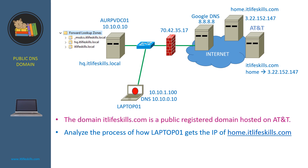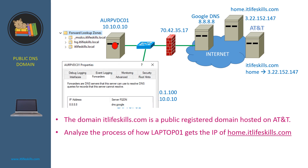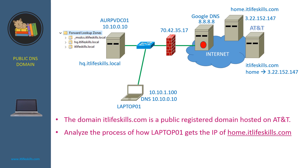In this network, the domain it-live-skills.com is a public registered domain hosted on AT&T DNS server. Let's analyze the process of how Laptop01 gets the IP address of home.it-live-skills.com. First, Laptop01 sends the query to its DNS server, OPVDC01. OPVDC01 checks in its forward lookup zones and doesn't find any zone for the domain it-live-skills.com, so it checks its forwarders and finds Google DNS server, then forwards the query to Google DNS server.